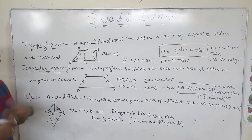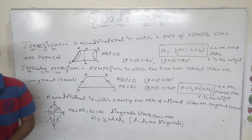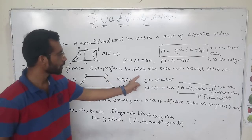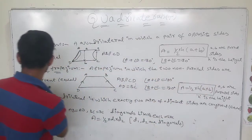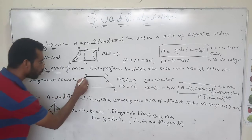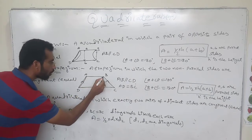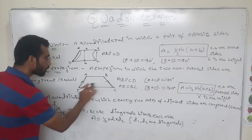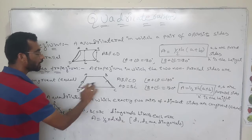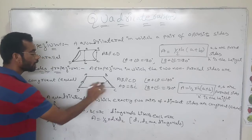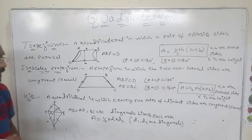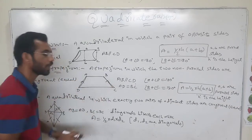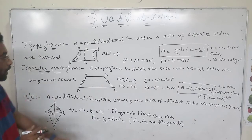In this trapezium, one more type is referred to as the isosceles trapezium. A trapezium in which the two non-parallel sides are congruent — that means equal. Here, in the regular trapezium, these two sides are not equal, but in an isosceles trapezium these two non-parallel sides are equal to each other.